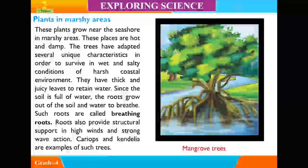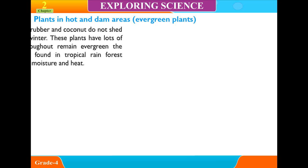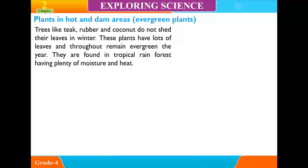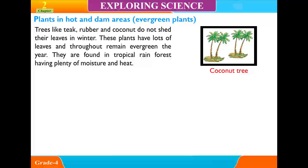Carryotes and Candelia are examples of such marshy area trees, known as mangrove trees. Evergreen Plants. Trees like tea, rubber, and coconut do not shed their leaves in winter. These plants have lots of leaves and remain evergreen throughout the year. They are found in tropical rainforests, having plenty of moisture and heat.